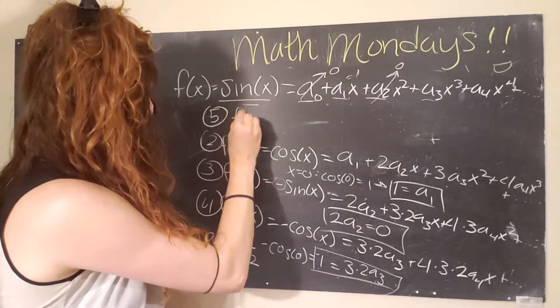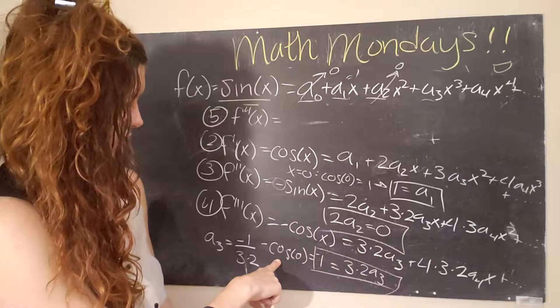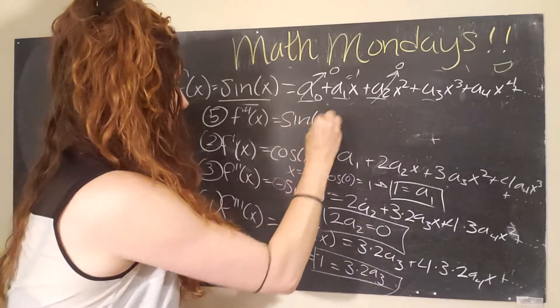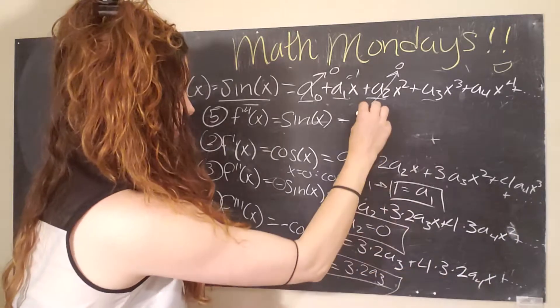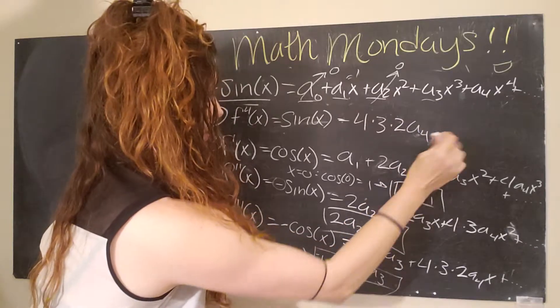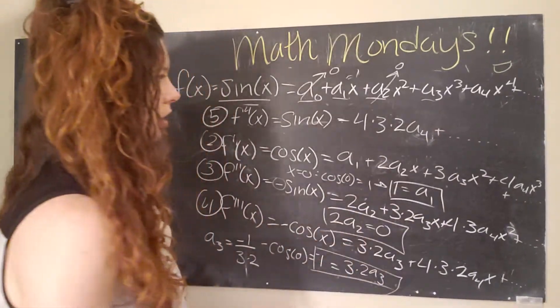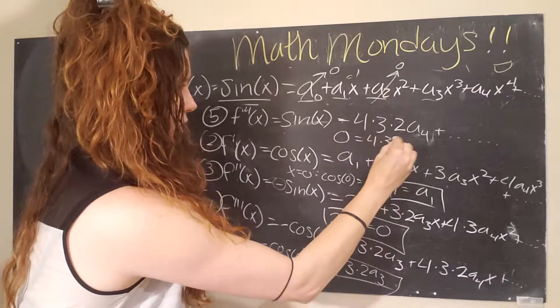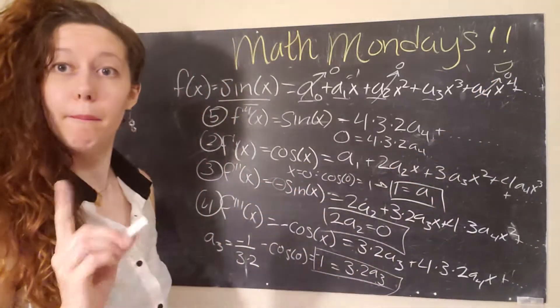So we'll do this one more time. And then hopefully the pattern will become clear. f the fourth derivative with respect to x, the derivative of cosine is negative sine. And so actually, look at that. We've come full circle. So sine of x equals, this goes away, and we are left with four times three times two a four plus, there will still be an infinite number of terms, but these all have x's. And so we apply our boundary condition zero equals four times three times two a four. So a four also goes to zero. Interesting.